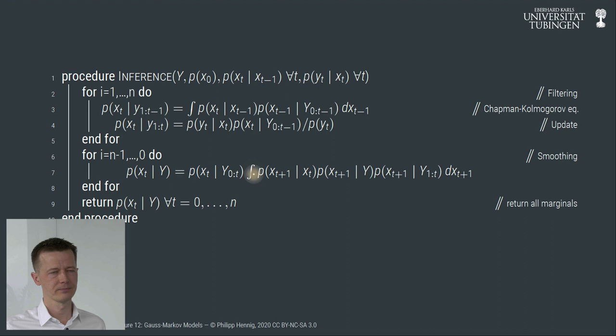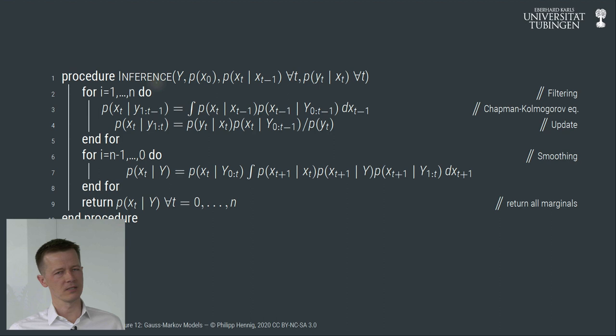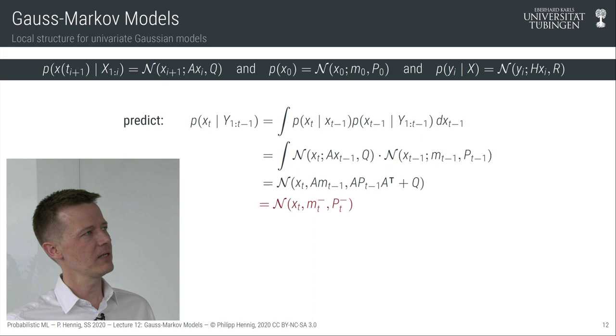To do this in practice on a computer, we have to choose specific values for these distributions. Once we have them, we can think about how to do the two integrals — the tricky parts. There's also a normalization constant hidden in Bayes' theorem. So let's make our lives easy and assume, for the rest of this lecture, that all distributions in this process are Gaussian and all relationships between variables are linear, so that everything becomes tractable in linear algebra again.